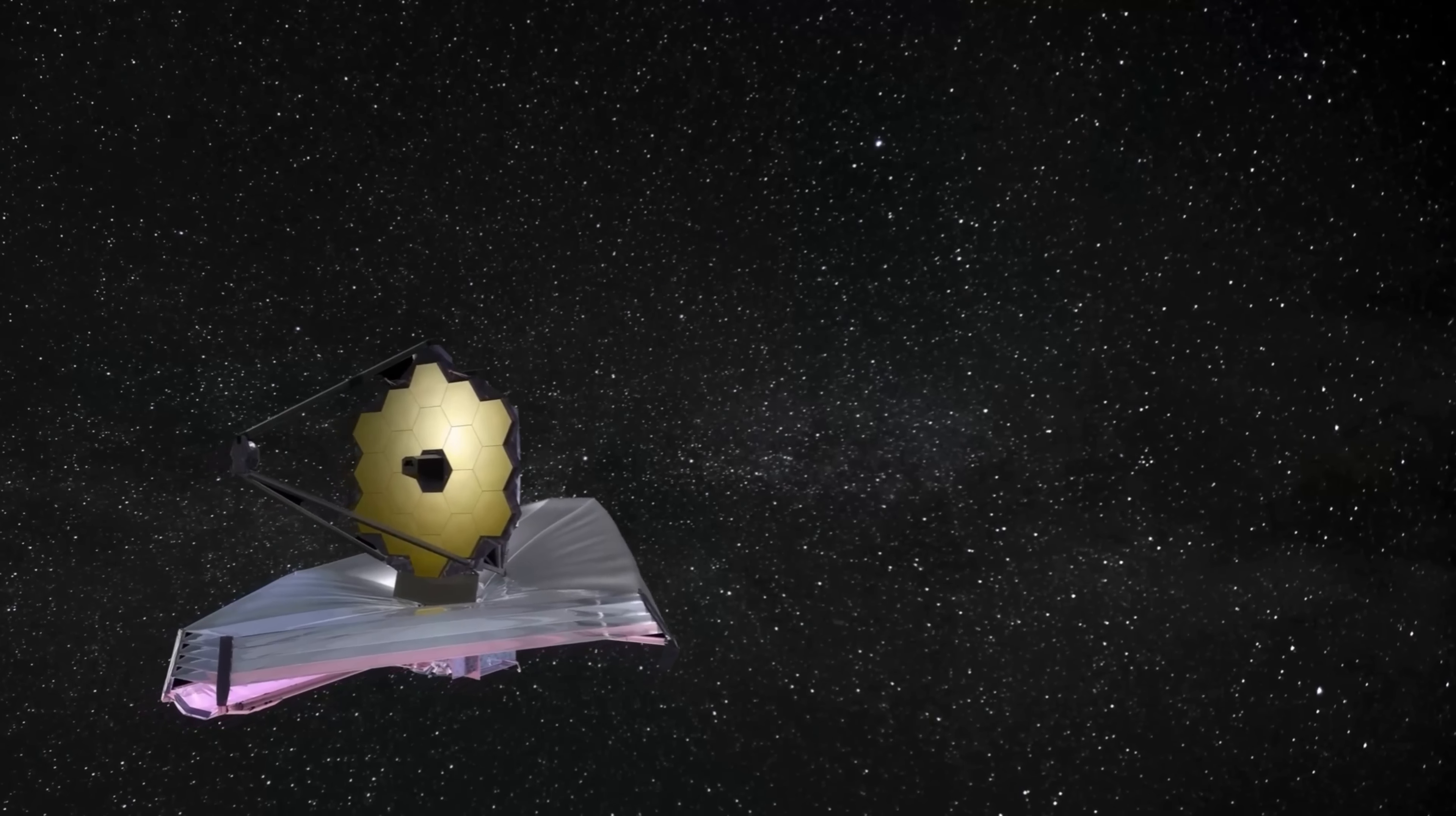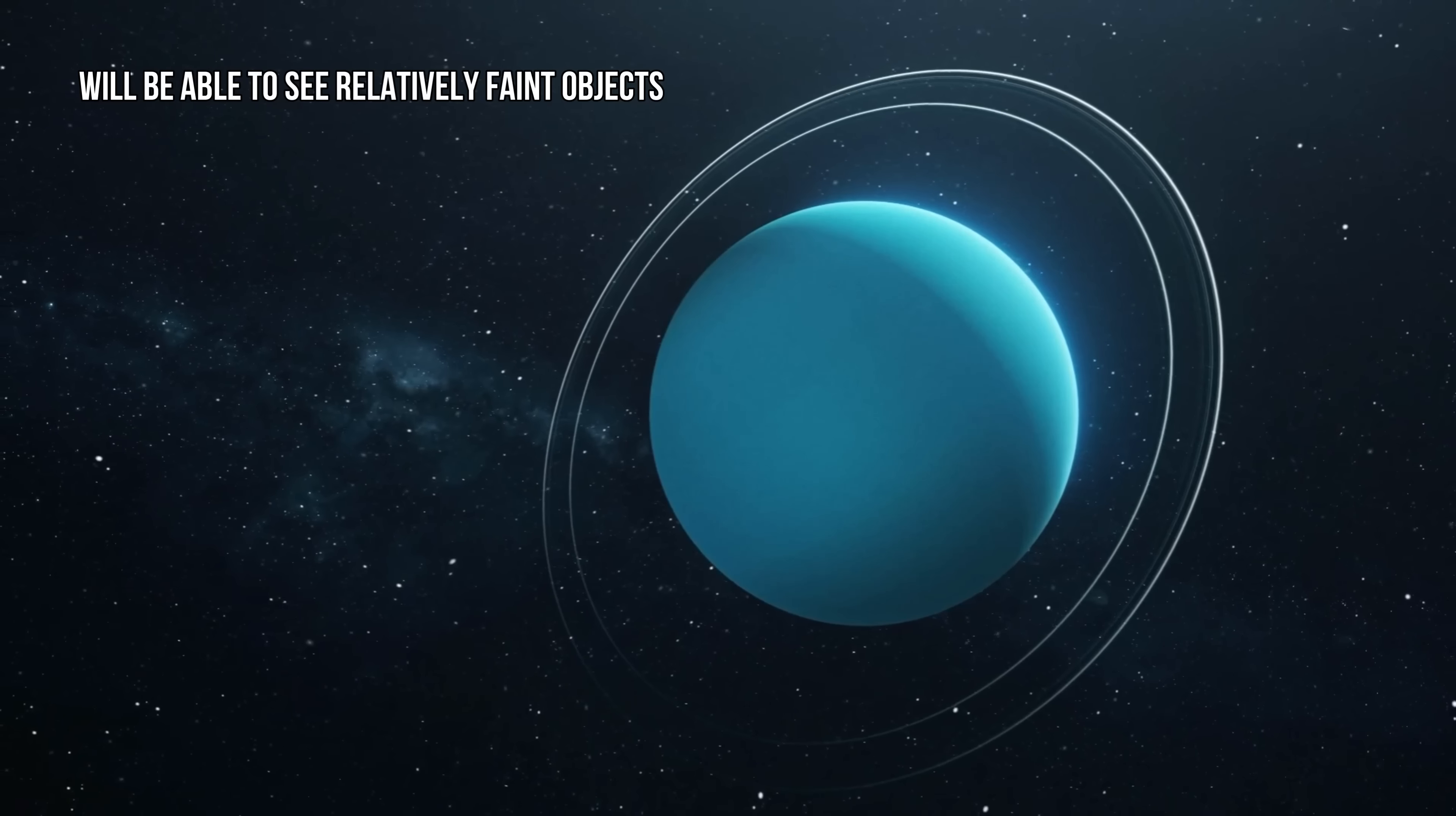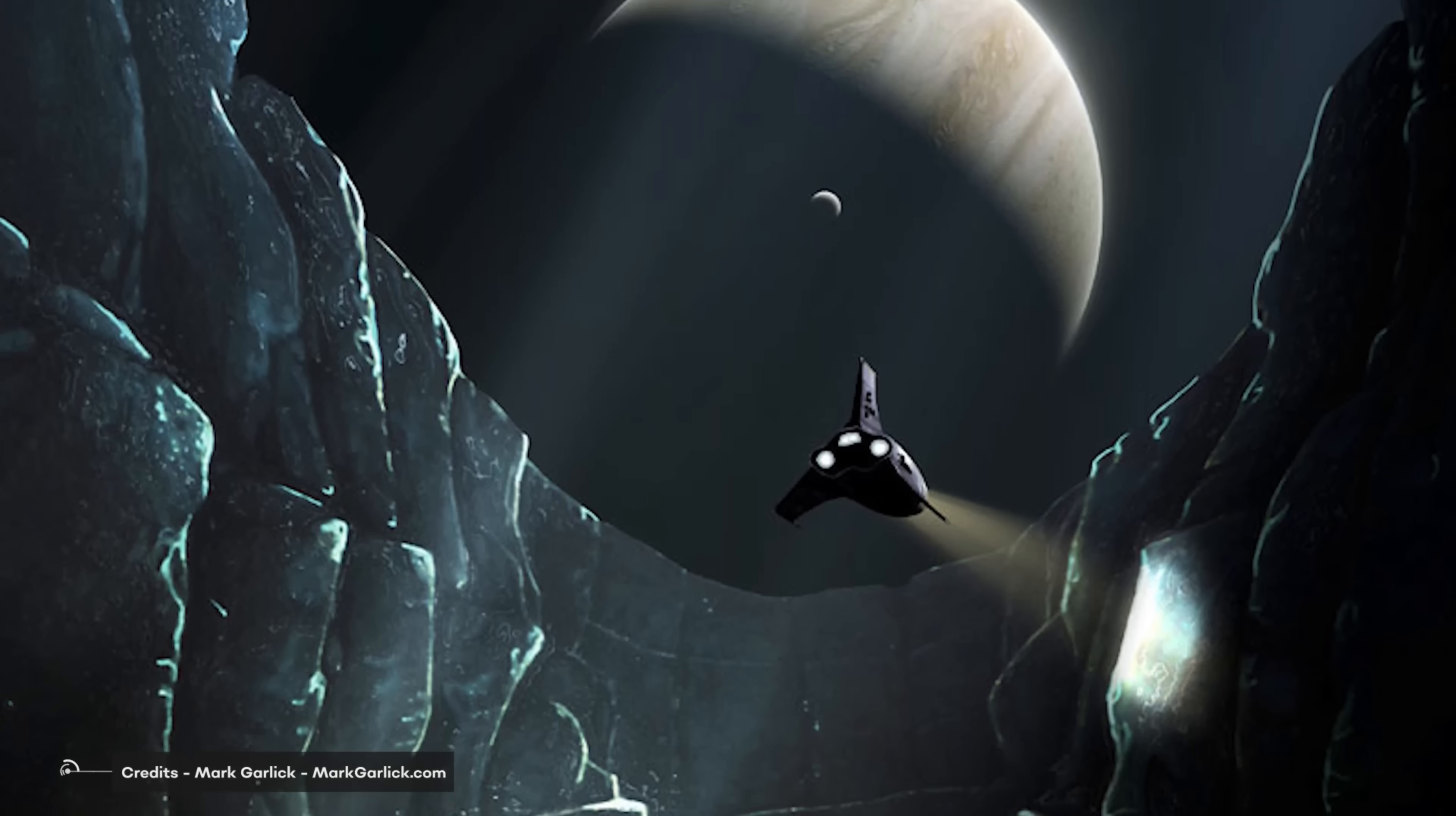The James Webb Space Telescope will provide unprecedented opportunities for observing planets and moons in our outer solar system, and in particular for searching for signs of possible life. The images released by NASA show that JWST will be able to see relatively faint objects, such as the rings and moons surrounding particularly bright planets like Jupiter and Saturn. This is important because many of these moons are thought to harbor liquid oceans beneath their surfaces, making them potential habitats for life as we know it.